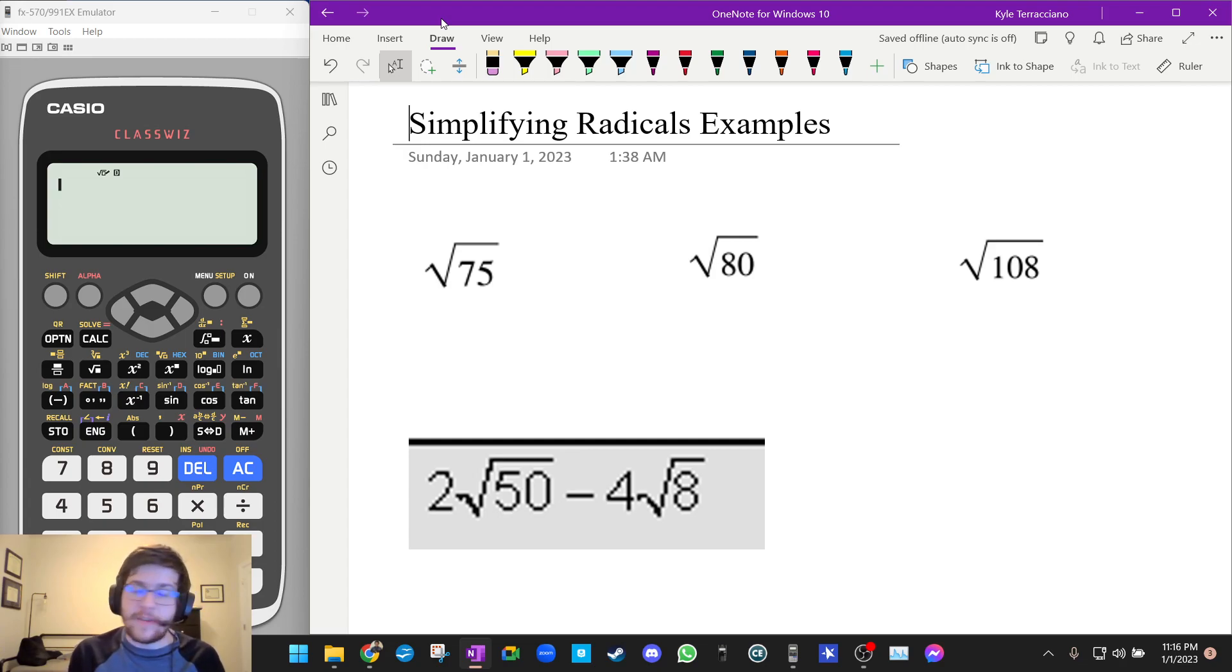On the Casio FX991EX, you can do this very easily. All you need to do is type in whatever radical expression you're trying to simplify, and it will do it for you. So you're just going to start on the command line where the little blinky guy is. And let's, for example, do square root 75 and then press enter.